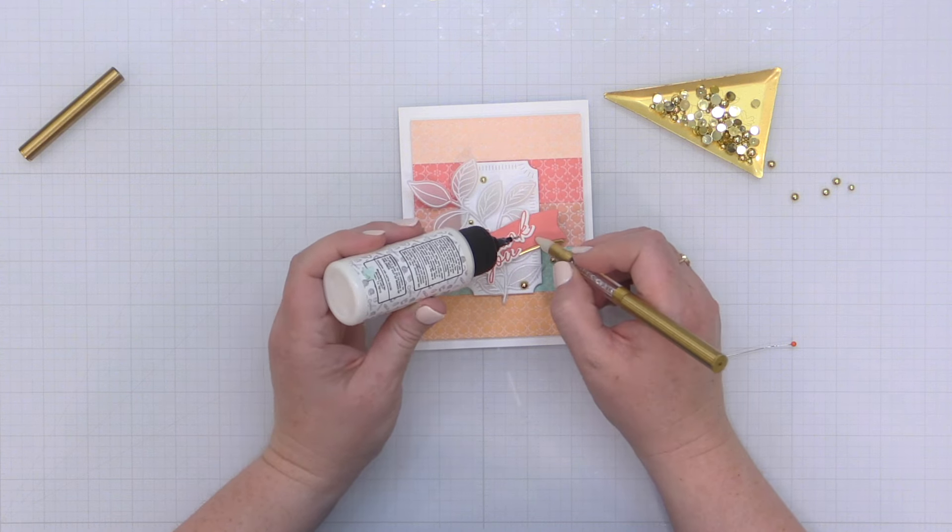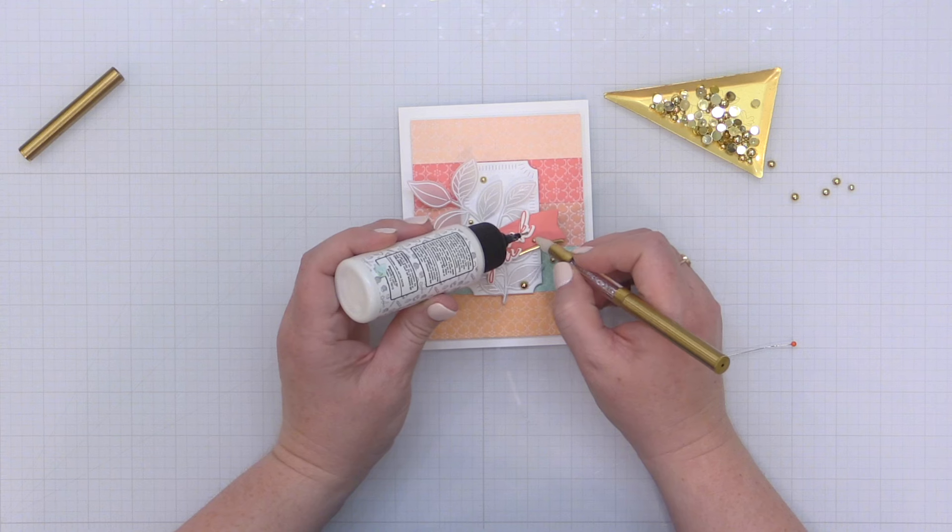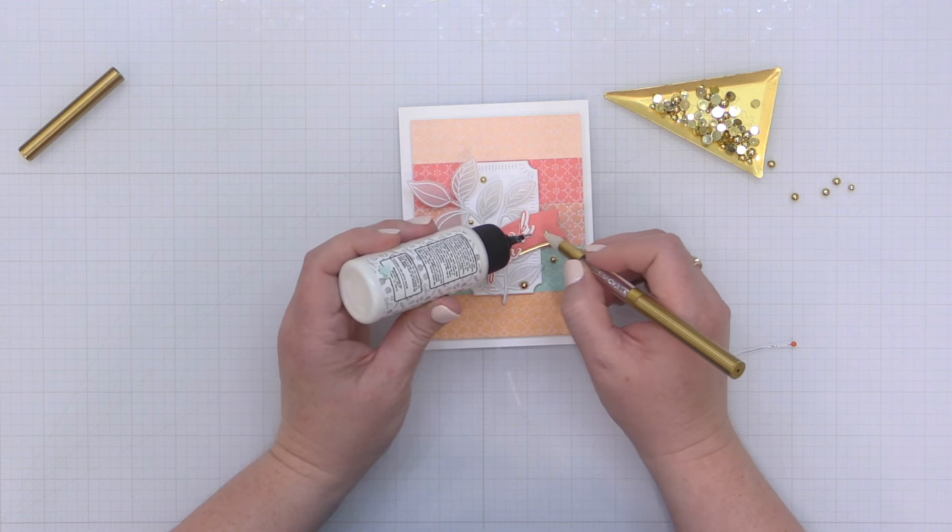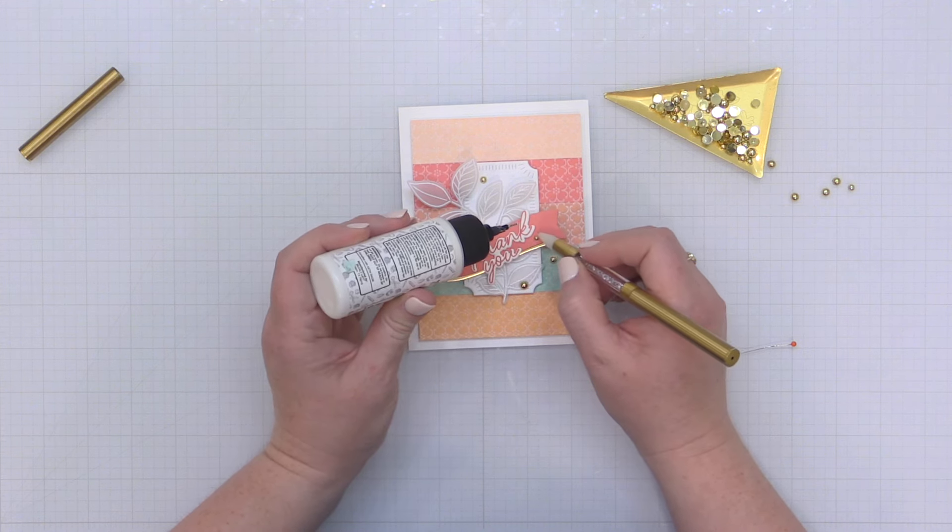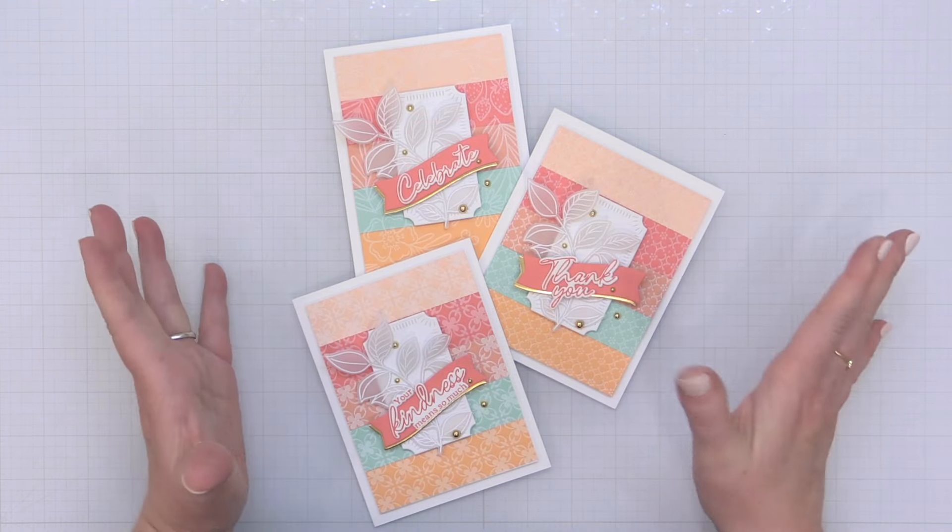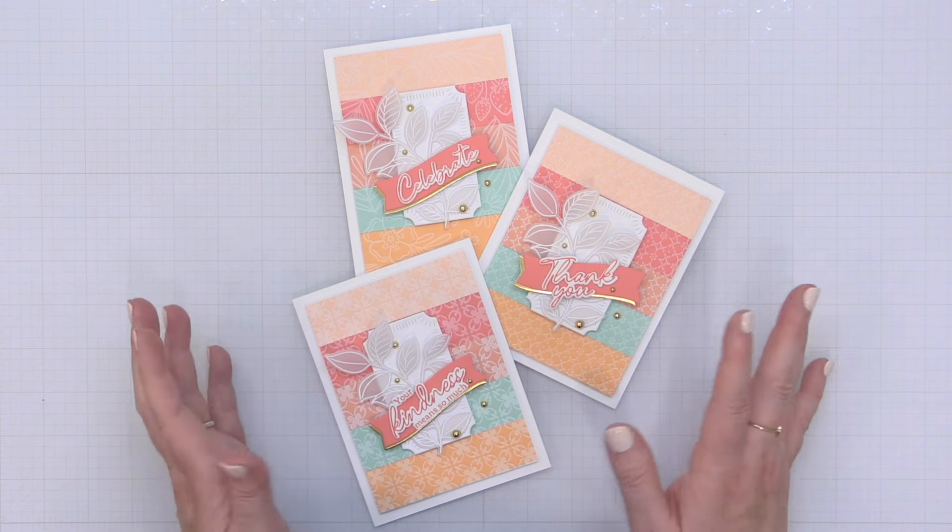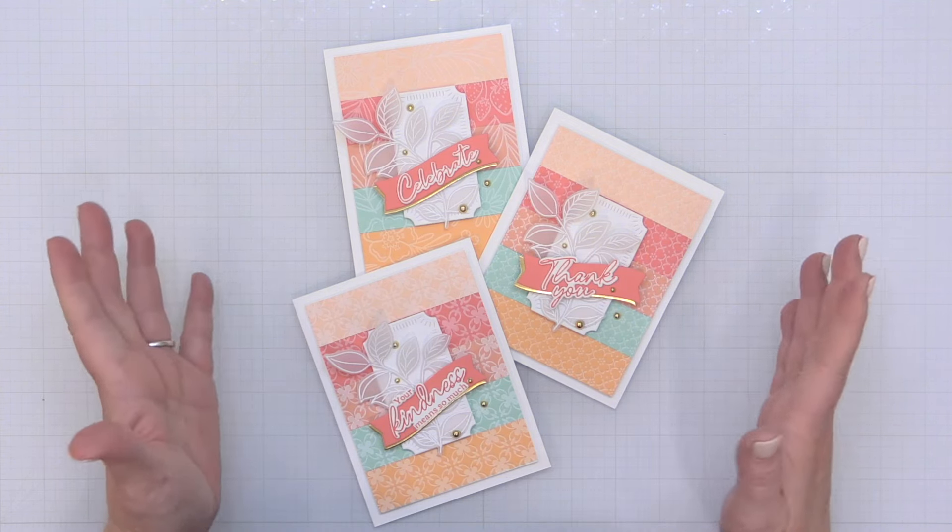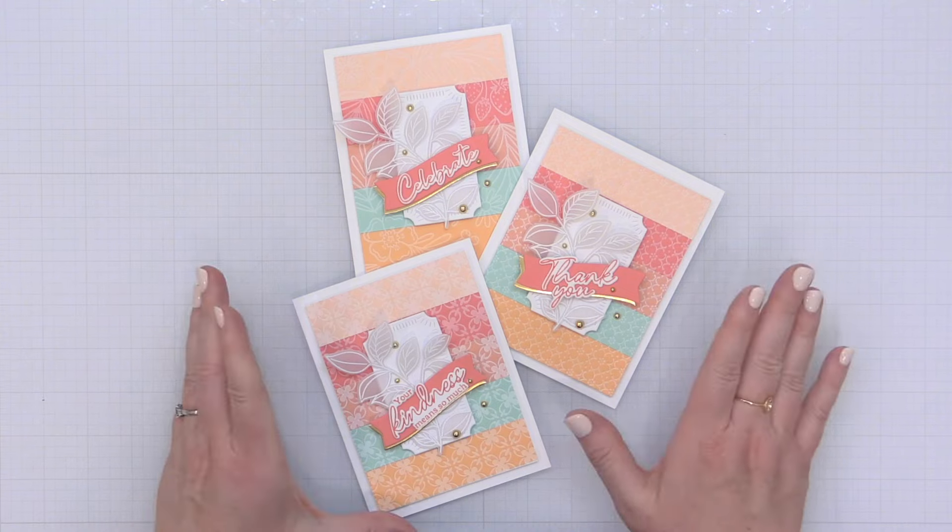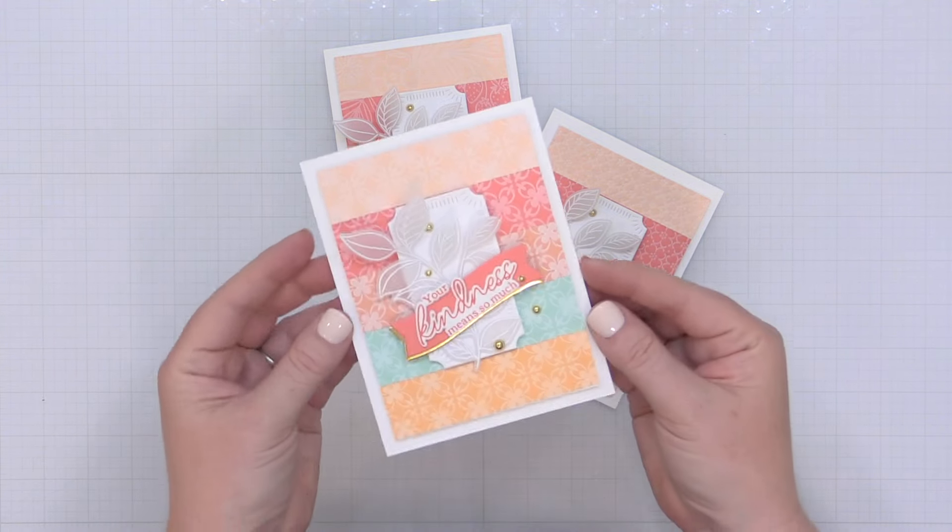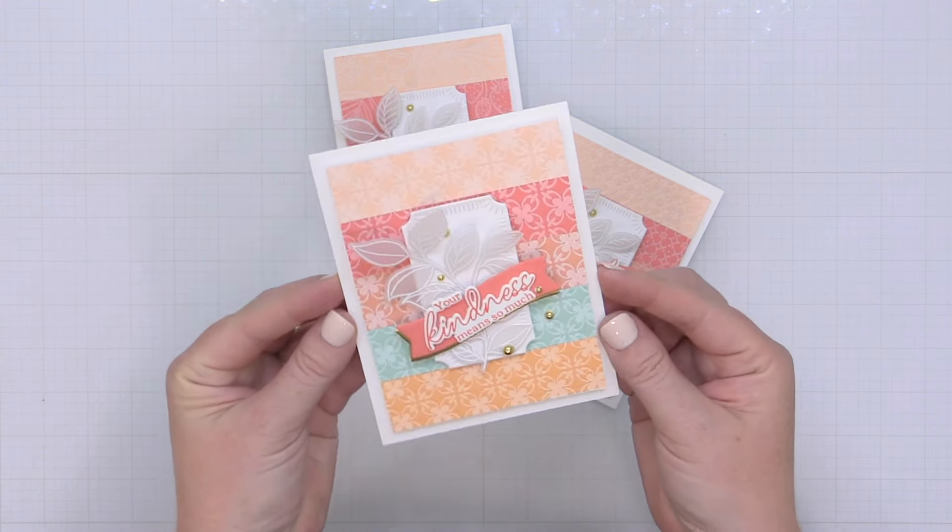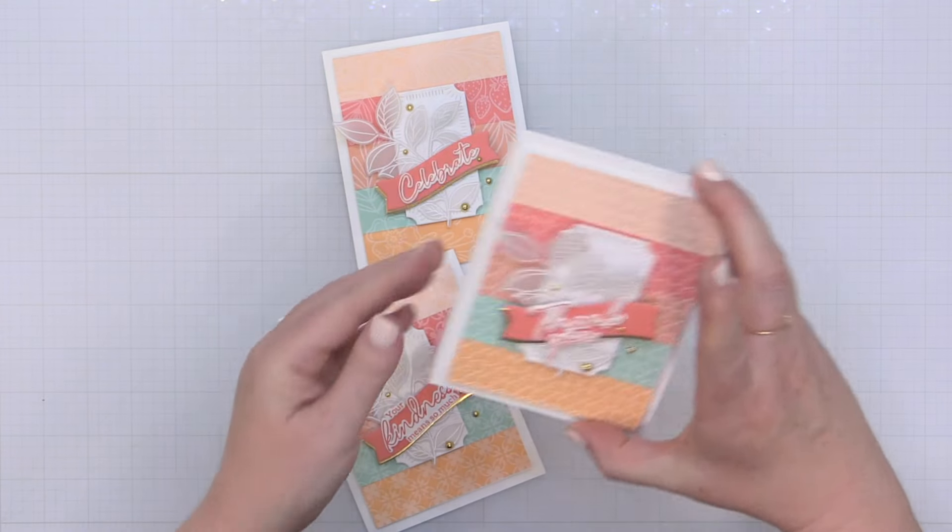Now I finished off each of these cards with some gold metallic pearls from Pink Fresh Studio. I'm just placing them on using a little bit of liquid adhesive and my dual tipped embellishment tool. And that completes my three card projects featuring some tips for better Better Press. And I think my favorite thing about all three of these cards is that they're perfect for any occasion. You could really change up the sentiment and maybe that leaf element that I used here to create cards for anything.